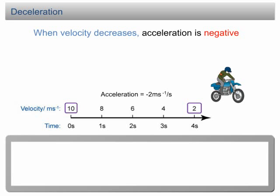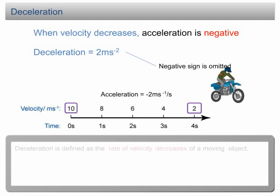When velocity decreases, acceleration is negative and we call this deceleration. In this case, the deceleration is 2 meter per second per second. Take note that when we use the word deceleration, the negative sign is omitted.